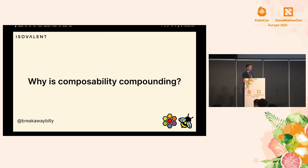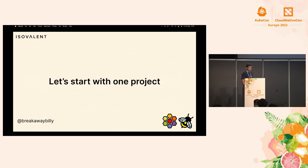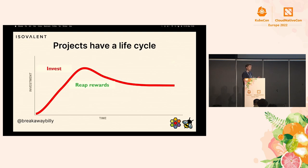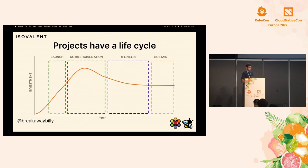Why exactly is composability compounding in software? Let's start with one project and look at the life cycle of that project. Every single project is going to have a life cycle in terms of the investment that people, the community, and companies need to make into it, and it changes over the life cycle. In the beginning you're making a lot of investments, and later on you reap the rewards. There are four different phases: the launch phase, commercialization, maintaining it, and sustaining the project.